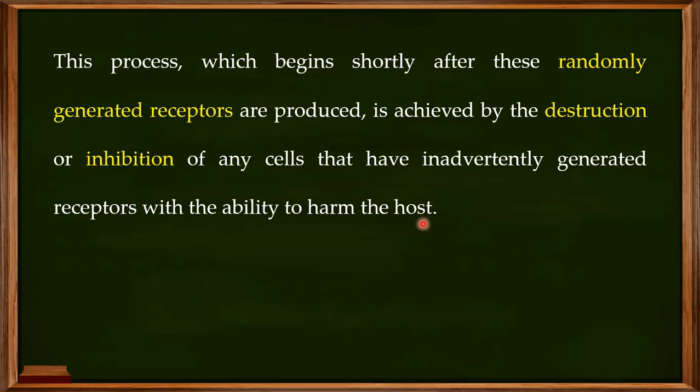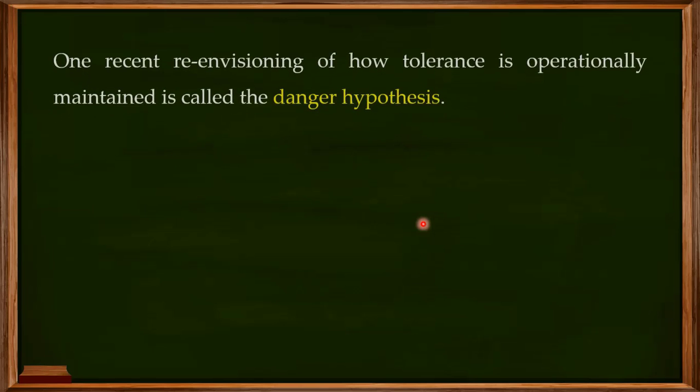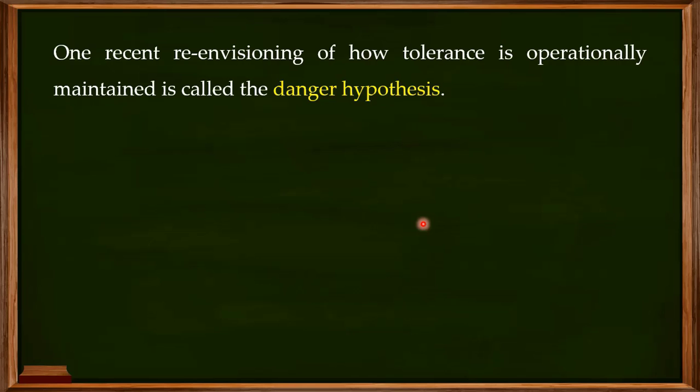This phenomenon applies to both B cells and T cells. The successful maintenance of tolerance ensures that the host always knows the difference between self and non-self. This is logical — we want our immune system to protect us from pathogens. We do not want it to damage our own cells. Immune tolerance ensures that the immune system has the ability to differentiate between the self and the non-self.